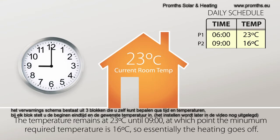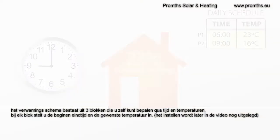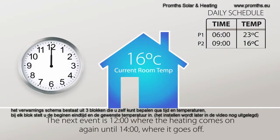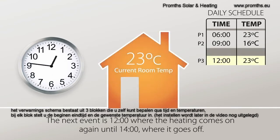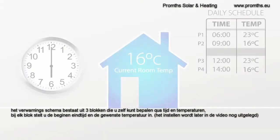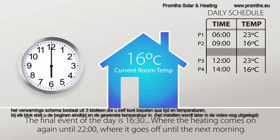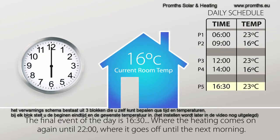The next event is lunchtime. Program 3 is the next on time and temperature, and Program 4 is the next off time and temperature. The heating comes on at midday until 2 p.m. The last event is afternoon or evening. Program 5 is the next on time and temperature, and Program 6 is the final off time and temperature of the day. The heating comes on at 6 p.m. until 10 p.m.